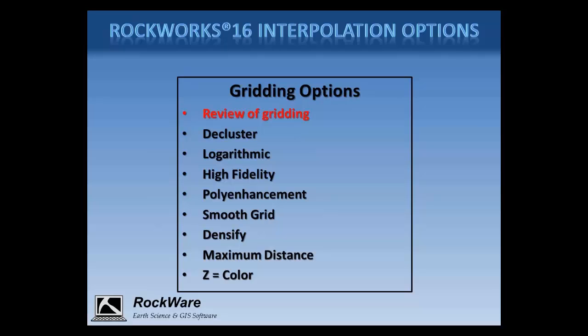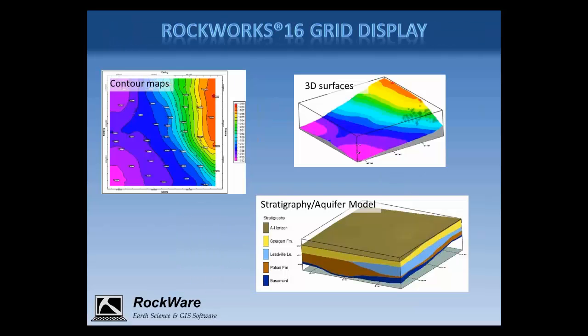First, I want to review what types of data would be used to create a gridded surface, which is an evenly spaced array of X, Y, Z values. Data used to create these 2D grids include topographic information, stratigraphy and aquifer data, or surface and subsurface analytical measurements such as assay data or groundwater contamination concentrations. Grids can be displayed as 2D contour maps or as 3D surfaces, and can also be incorporated into stratigraphy and aquifer models.